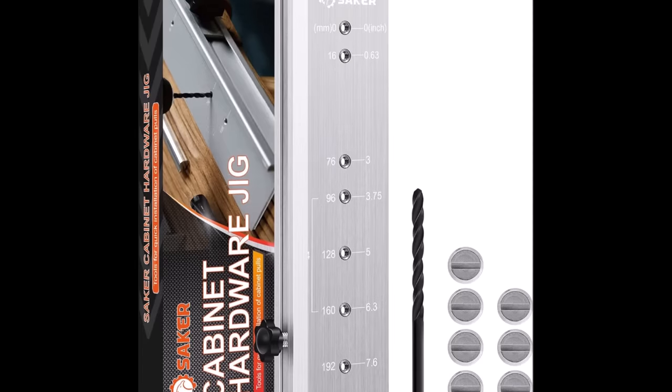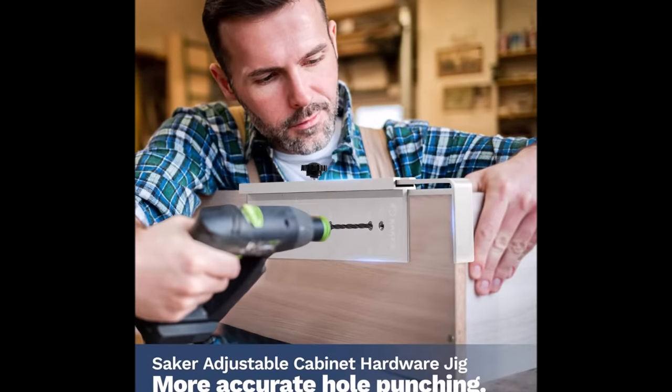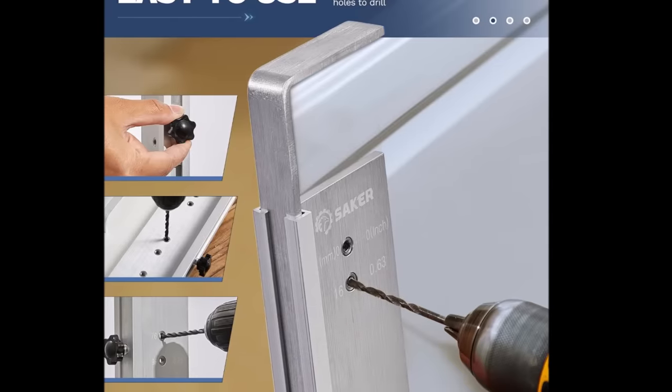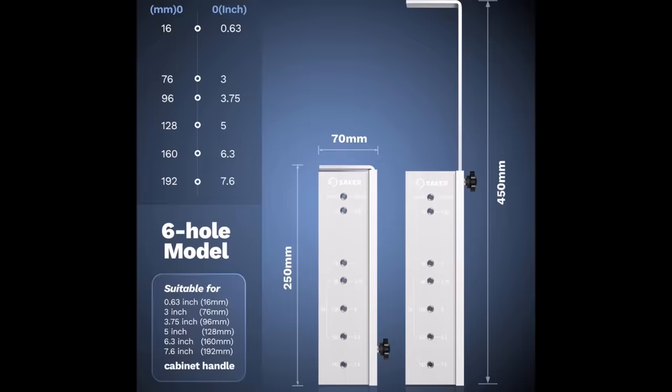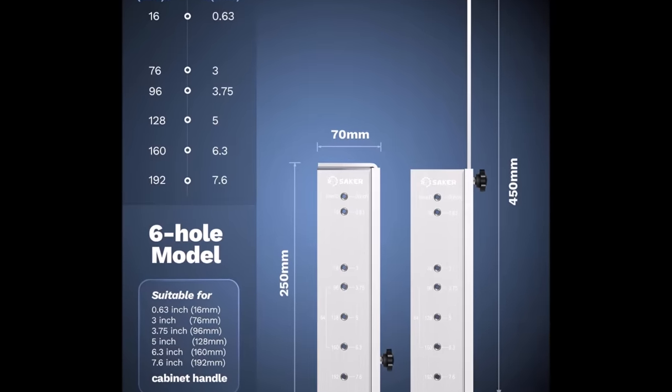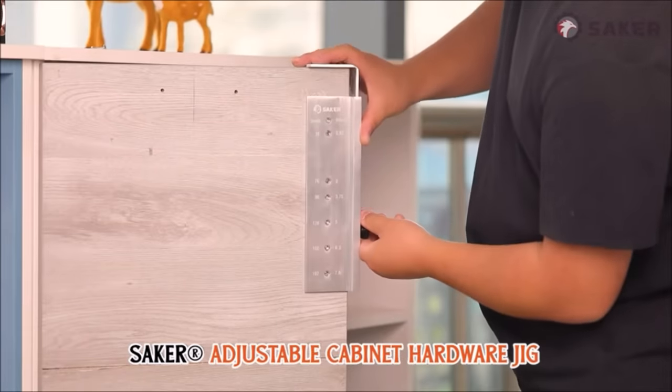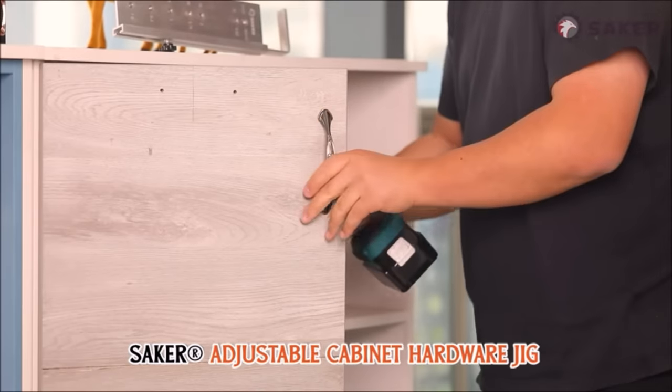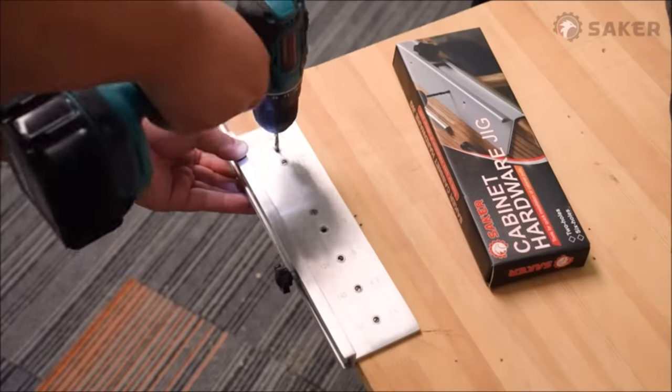Number 9. The Saker expandable hole locator cabinet hardware jig is a must-have for woodworking enthusiasts, offering precise and consistent placement for cabinet hardware, ensuring a polished and professional finish. This adjustable jig not only saves time but also enhances efficiency by enabling quick and accurate drilling of multiple holes. Its user-friendly design makes it easy to adjust, catering to the size and shape of various cabinets, making it accessible for both professionals and DIY enthusiasts. The Saker jig proves to be cost-effective, eliminating the need for manual measuring and marking, reducing the risk of errors and material wastage.